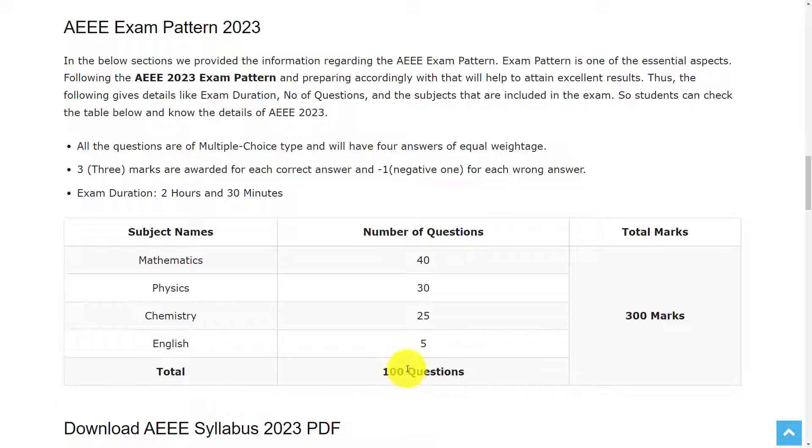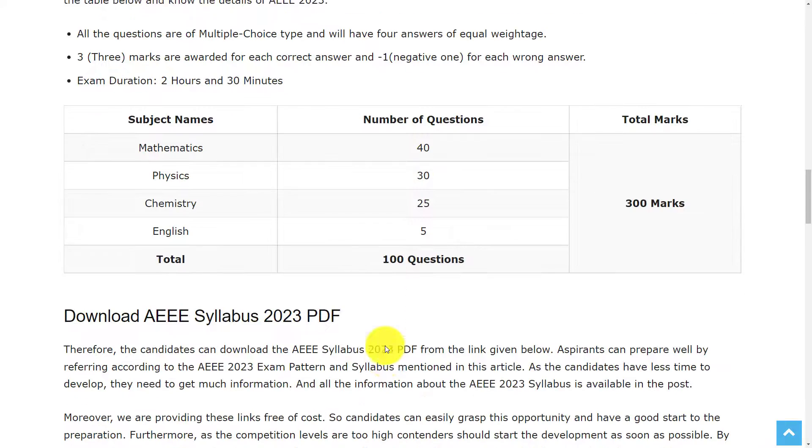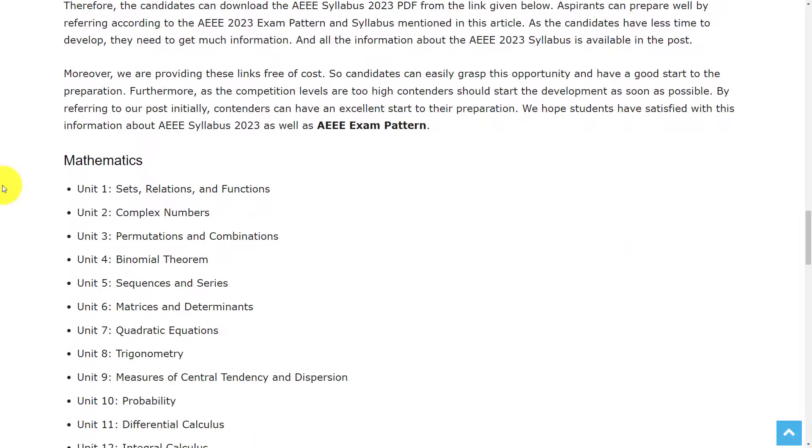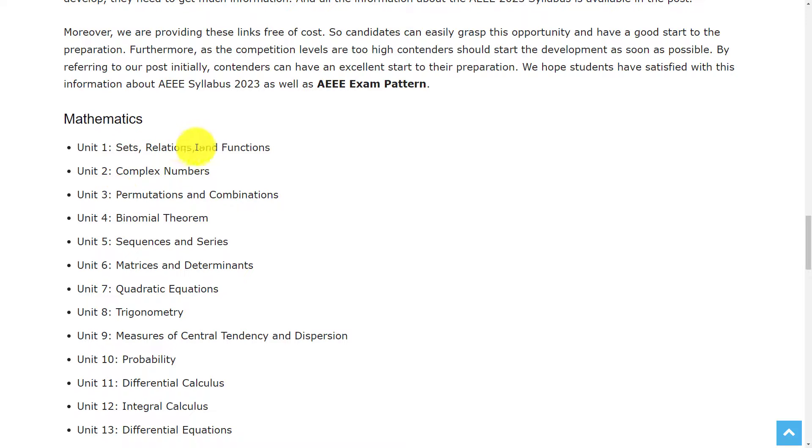Let's see the syllabus. Section A consists of Mathematics, in which the topics are: Sets, Relations and Functions, Complex Numbers, Permutations and Combinations, Binomial Theorem, Sequences and Series, Matrices and Determinants, Quadratic Equations,